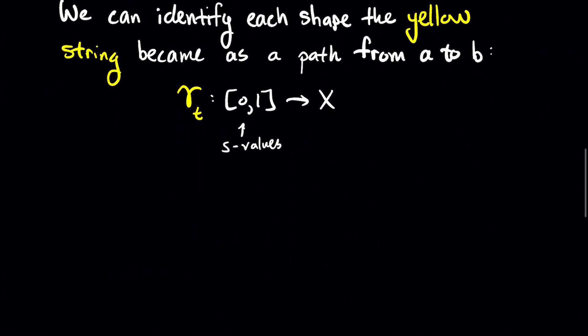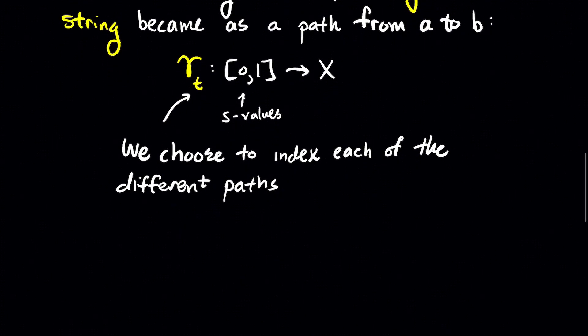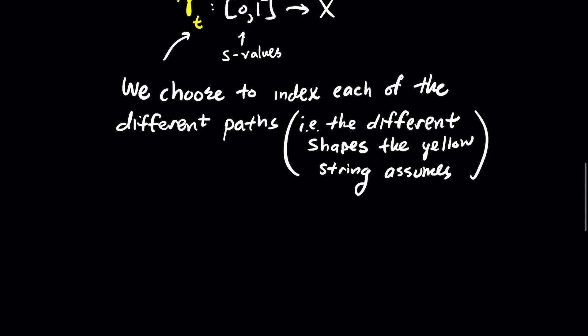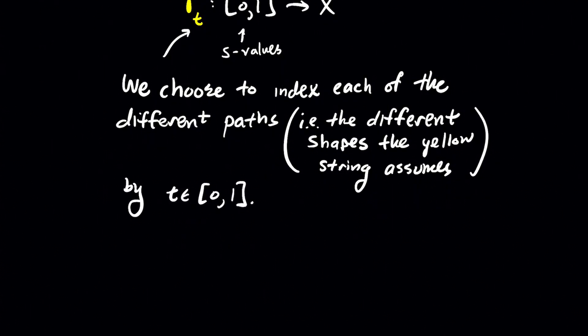We can identify each shape that the yellow string became as a path from A to B. So we'll give it a name gamma sub T. Again the input variable is S and it outputs a point in my topological space. And here we choose to index each of the different paths.